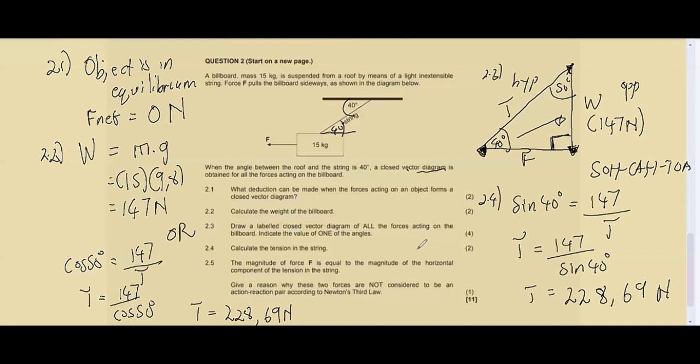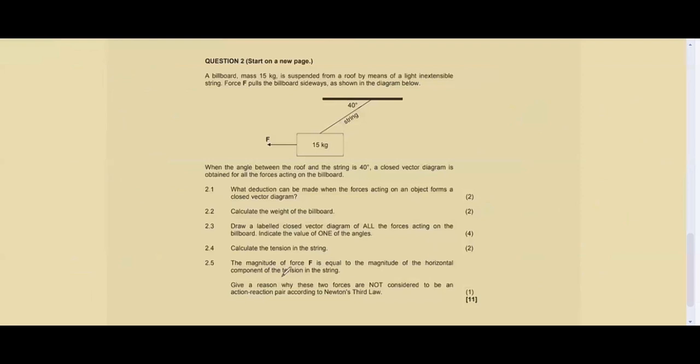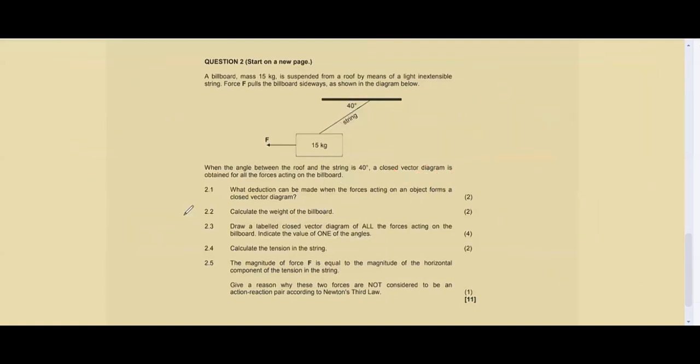Question 2.5: the magnitude of force F is equal to the magnitude of the horizontal component of the tension in the string. What they mean is if you resolve this, you have your force F, and they say it will be equal to the horizontal component of tension, which is Tx. Give a reason why these two forces are not considered to be an action-reaction pair according to Newton's third law.